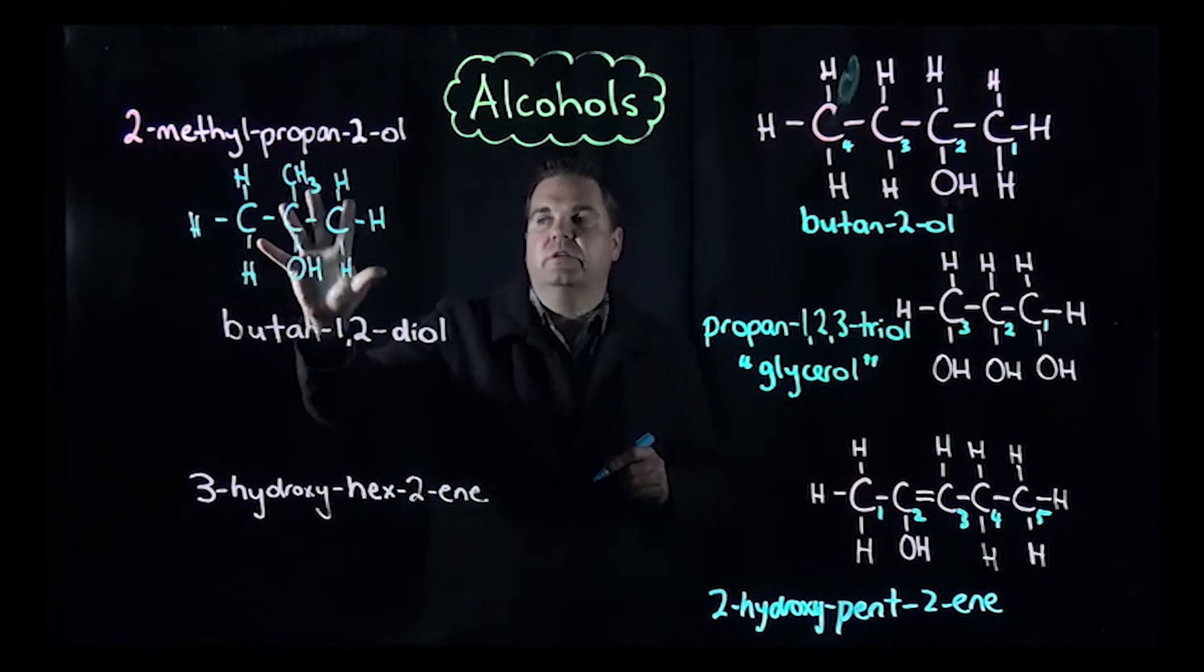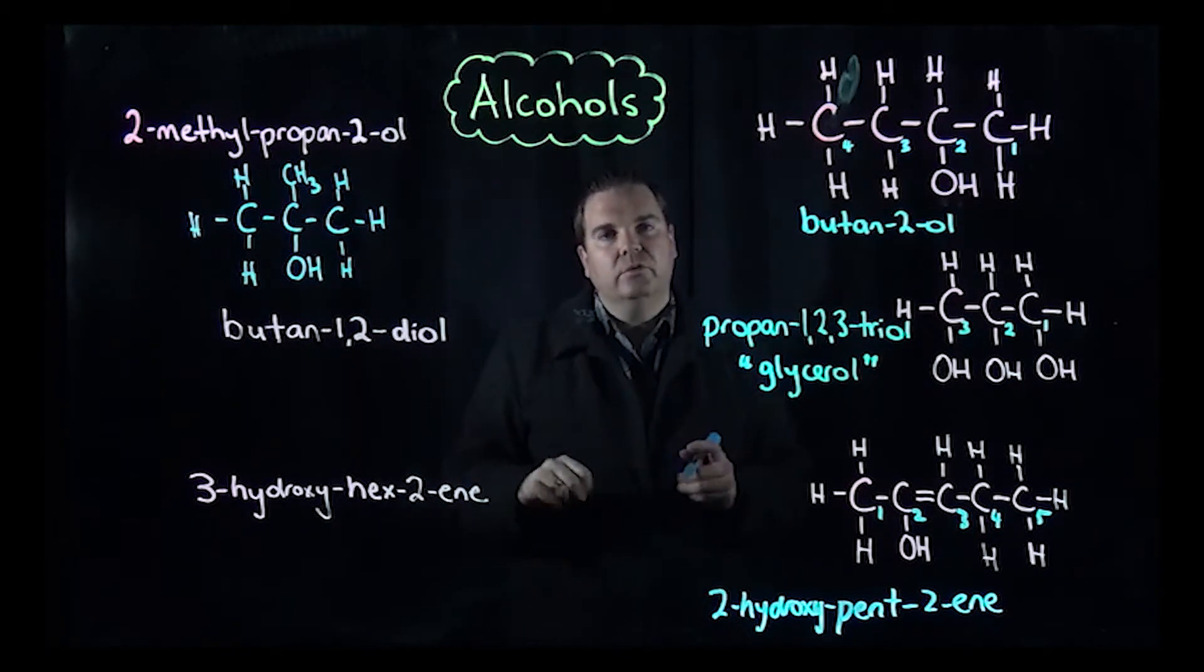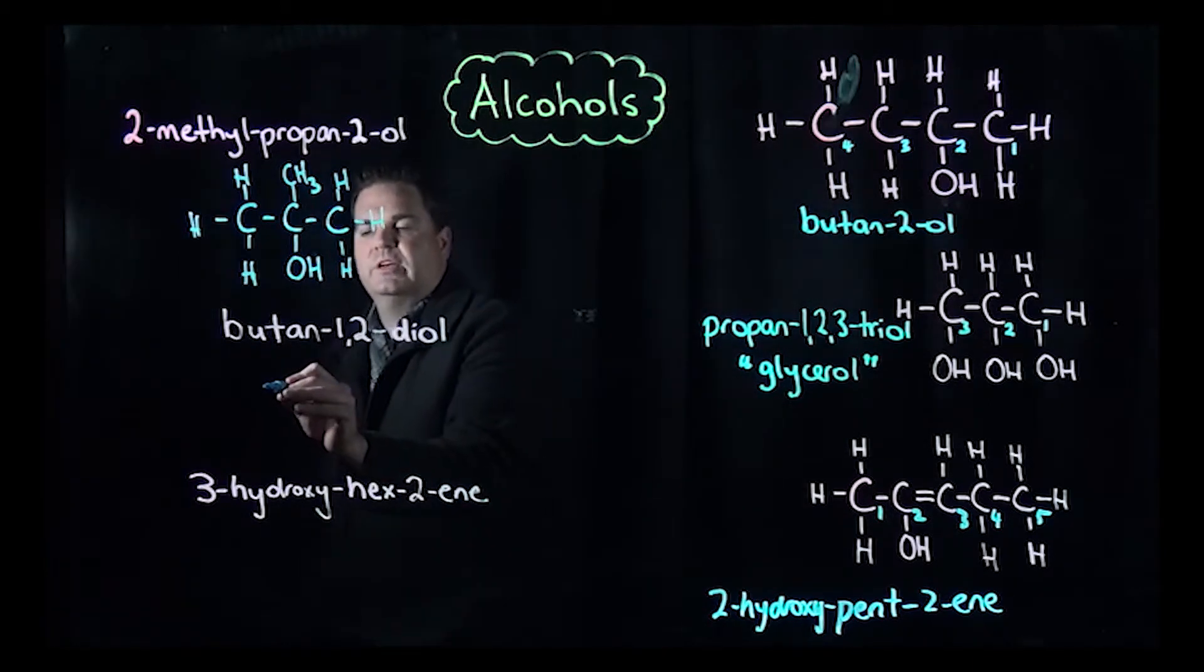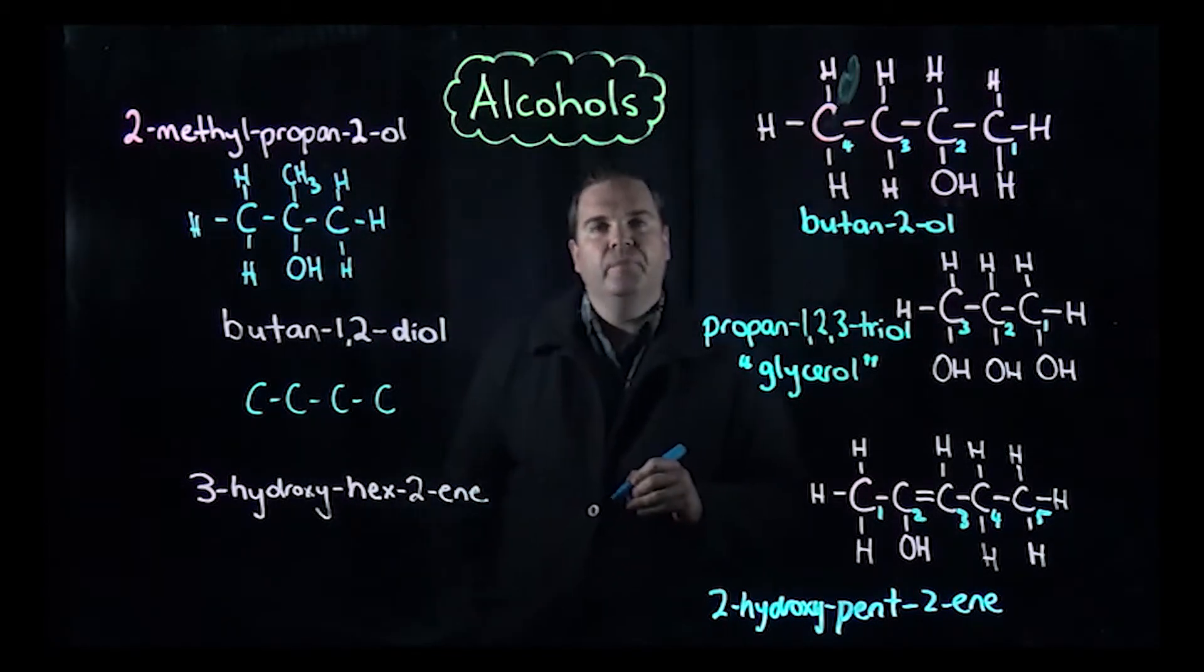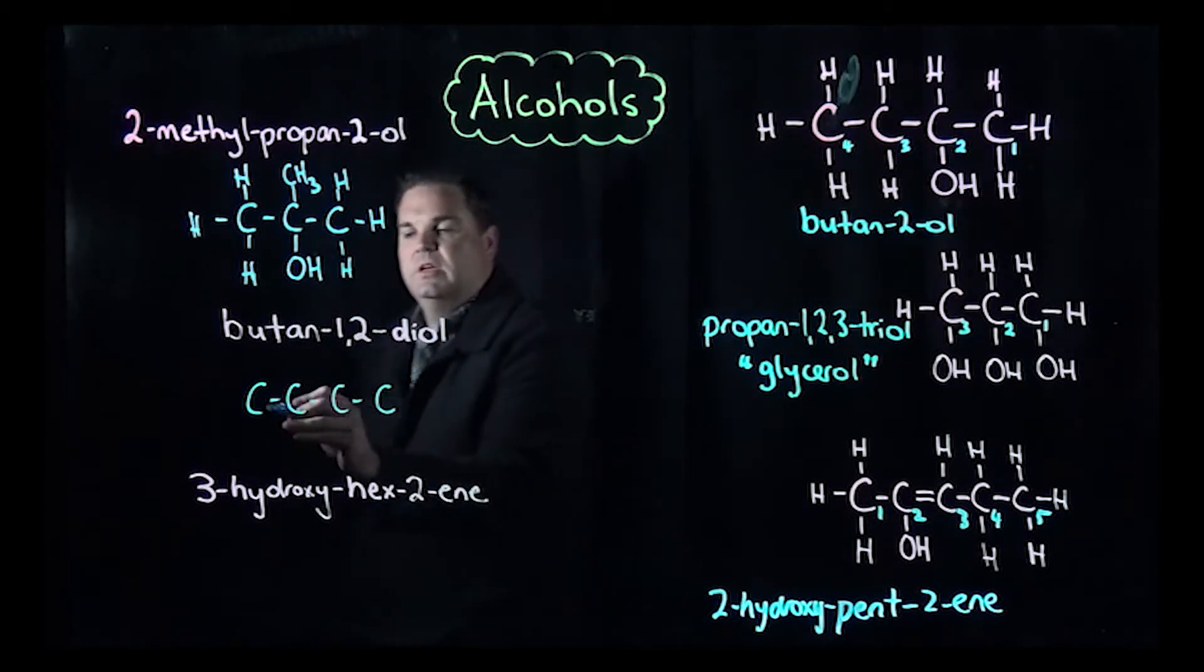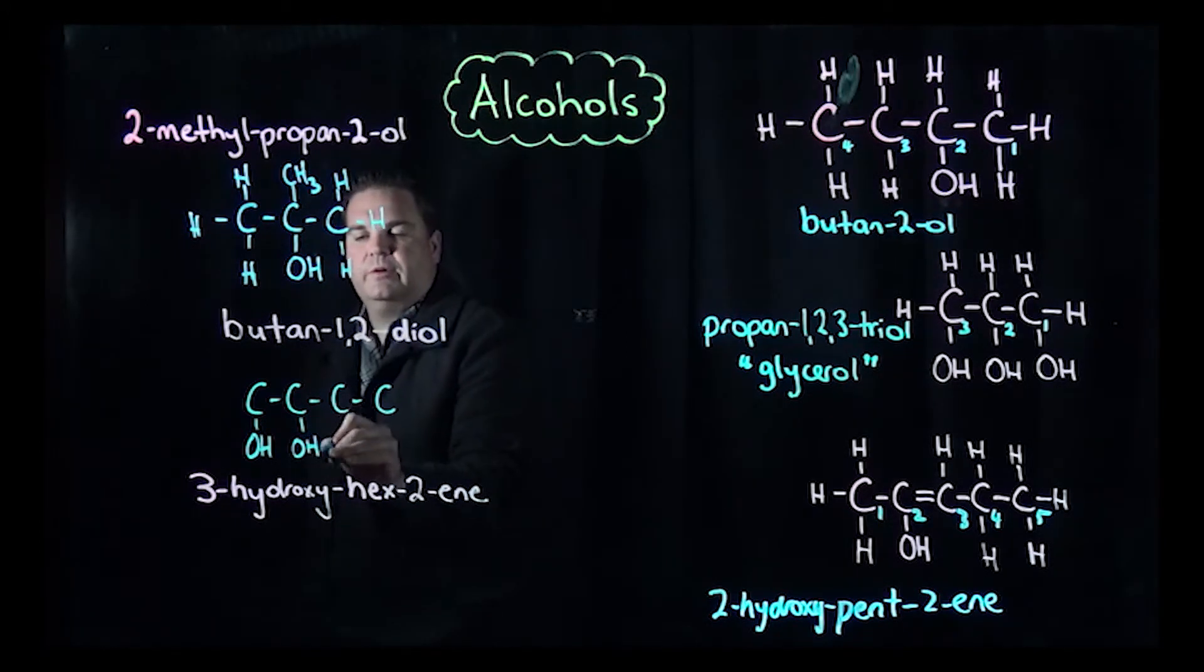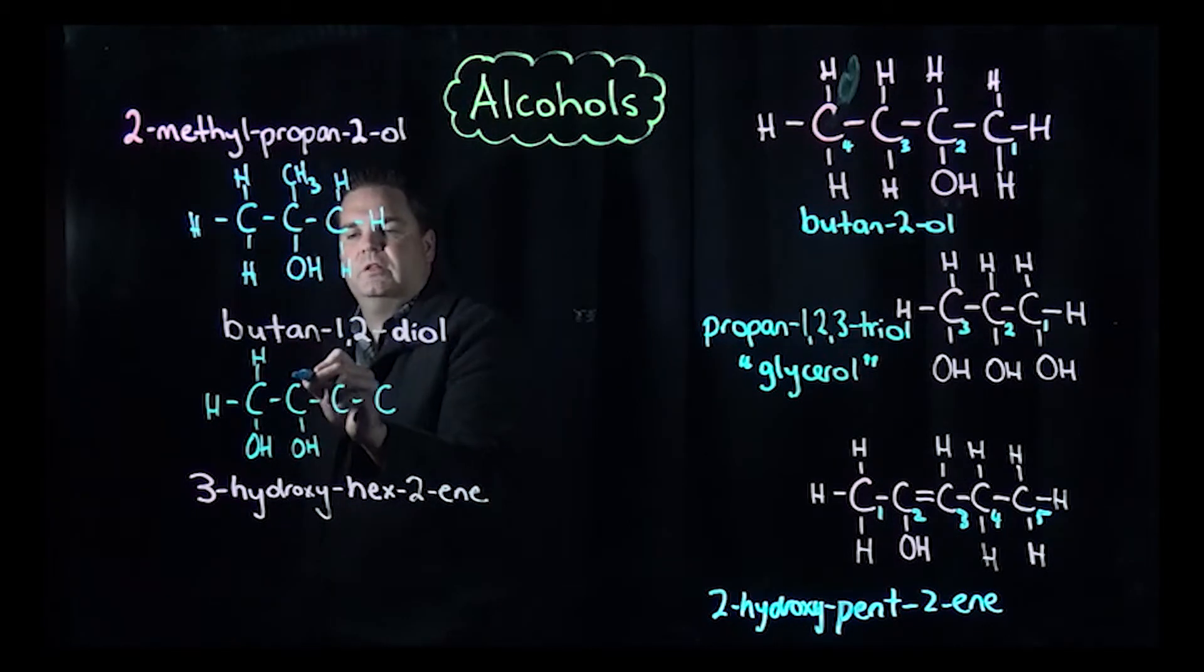Butan-1,2-diol: we identify the number of carbon atoms. Butan means four, so we put in our four carbon atoms, one, two, three, four. There's an alcohol functional group, diol is two, and that tells us where it is on the first and second carbon atoms. There's an OH group on that one and an OH group on that one. Then you fill out the rest of the molecule - four bonds around every carbon.